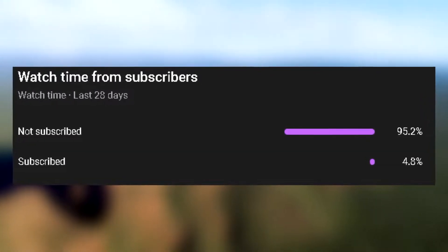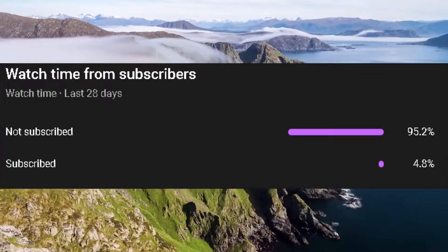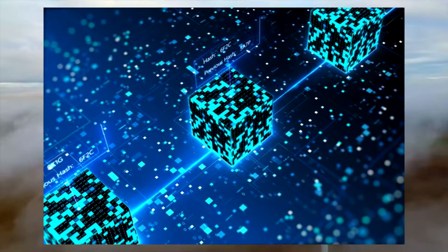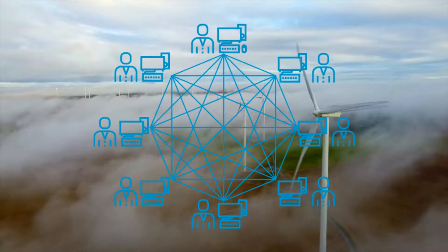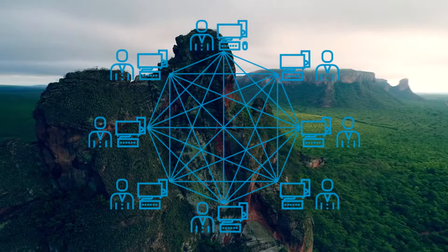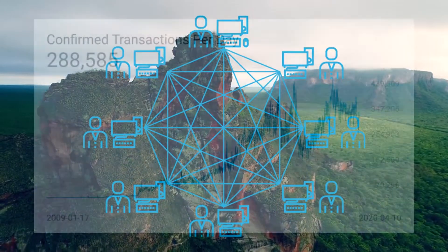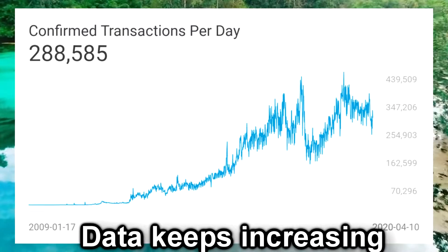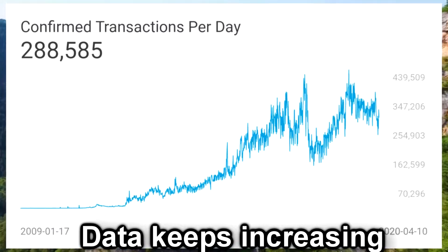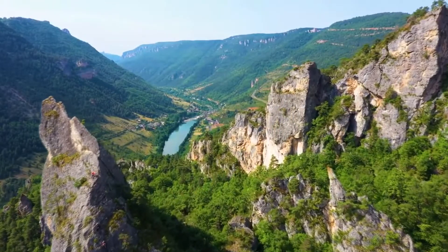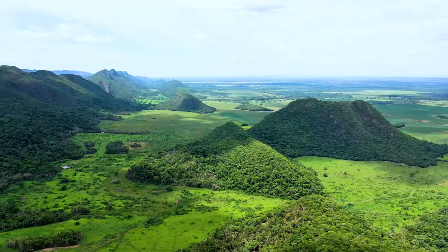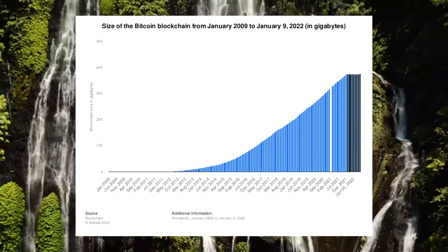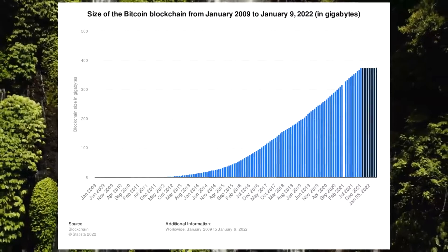Blockchains today are made up of a series of independent decentralized nodes all over the world. Each node, a network participant, stores all transaction histories and data. You can see the problem evolving: as the number of users on the network increases, so does the size of data. In the long run, blockchains will get bogged down and run into latency issues due to the huge amounts of data each node has to store, and this is unsustainable.